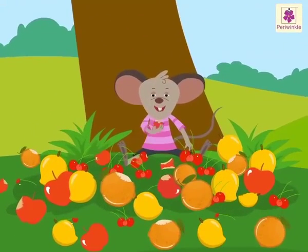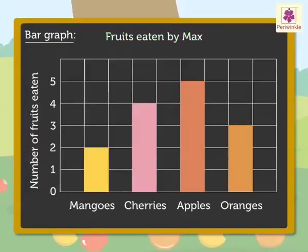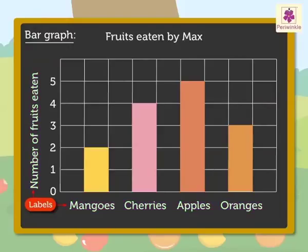Max the mouse ate some fruits. Let's read this bar graph. The title 'Fruits Eaten by Max' tells us the bar graph is about the number of fruits eaten by Max the mouse. The labels tell us that the data is about the kind and number of fruits eaten.